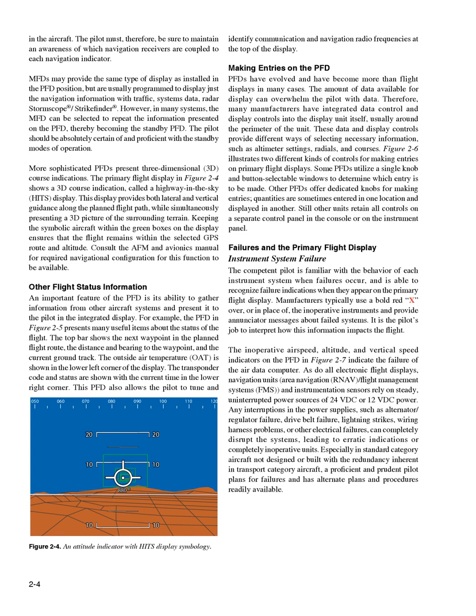It is the pilot's job to interpret how this information impacts the flight. The inoperative airspeed, altitude, and vertical speed indicators on the PFD in Figure 2-7 indicate the failure of the air data computer. As do all electronic flight displays, navigation units, area navigation, RNAV, and flight management systems, FMS, and instrumentation sensors rely on steady, uninterrupted power sources of 24 VDC or 12 VDC power.